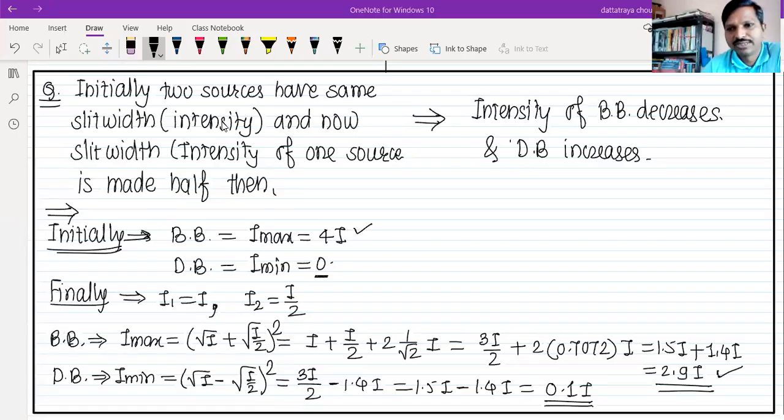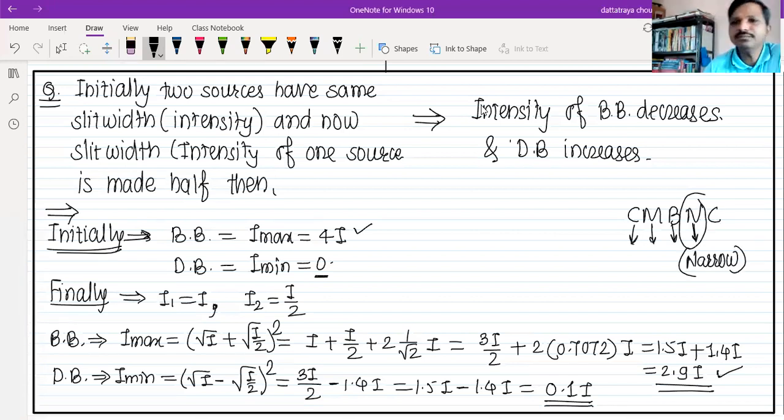So this is for today's lecture of physics. Coherent, monochromatic, equally bright. And the third is why the two sources should be narrow. This is the third condition we have to do next lecture.